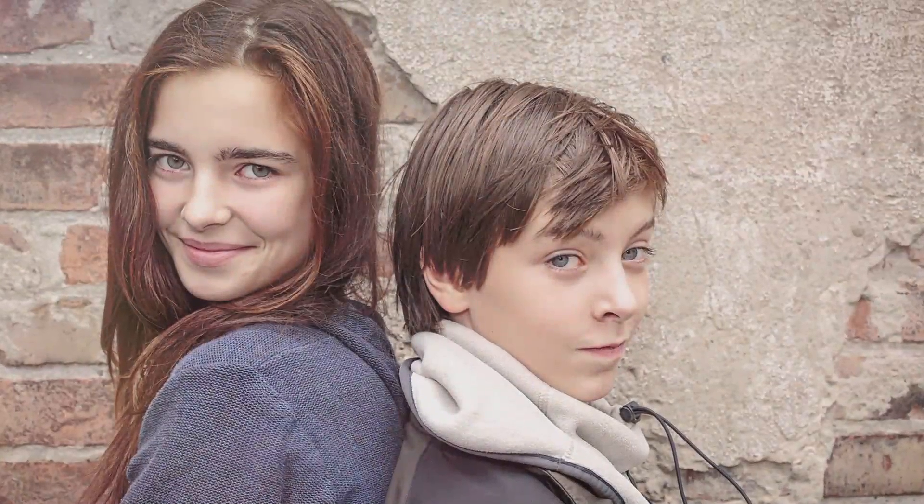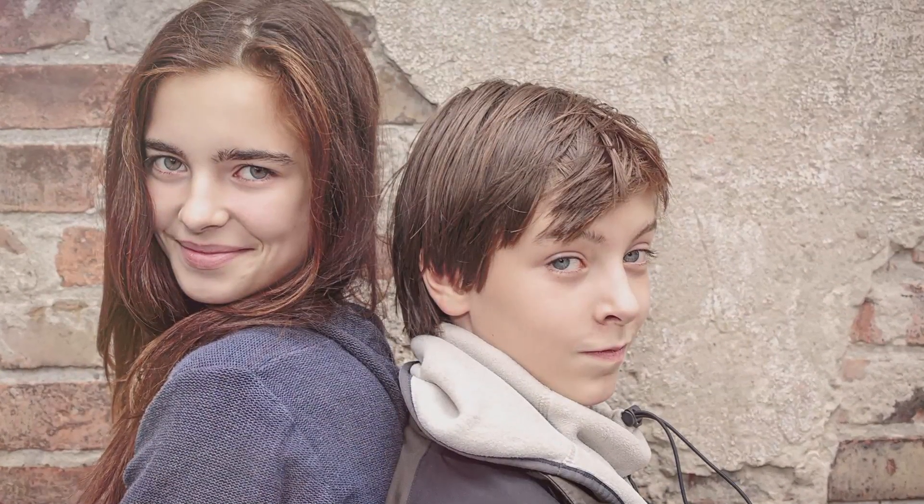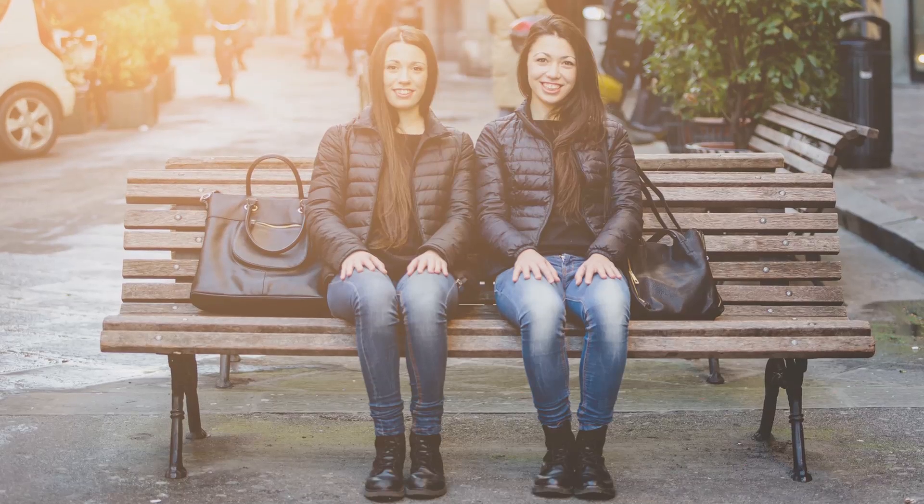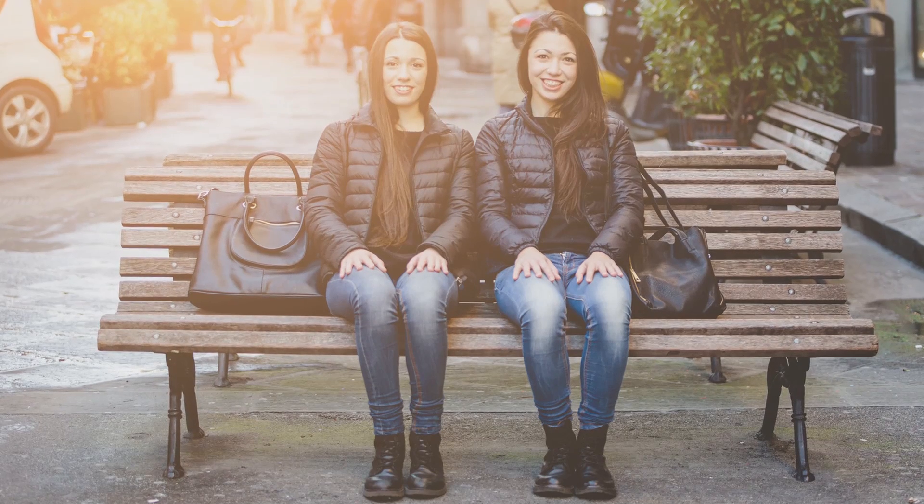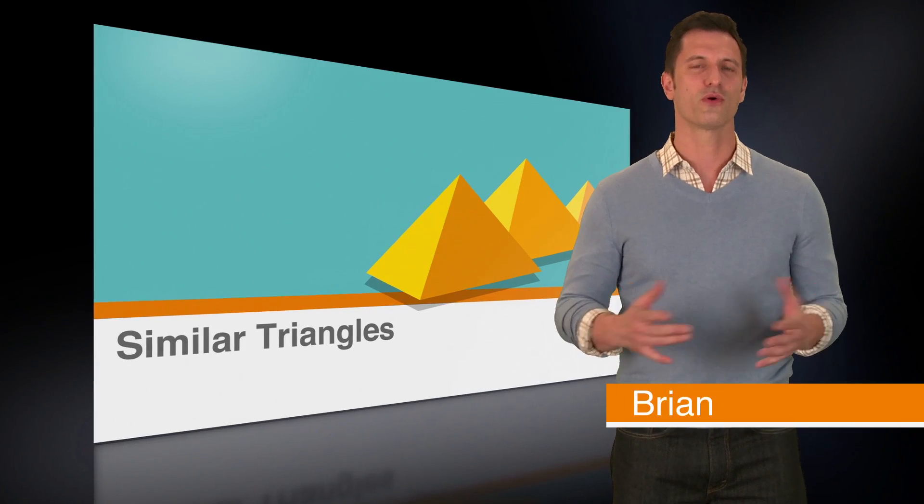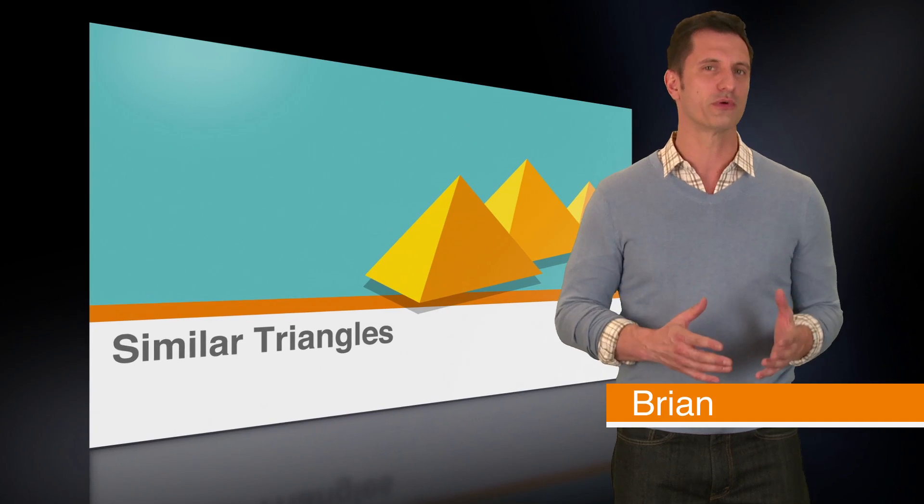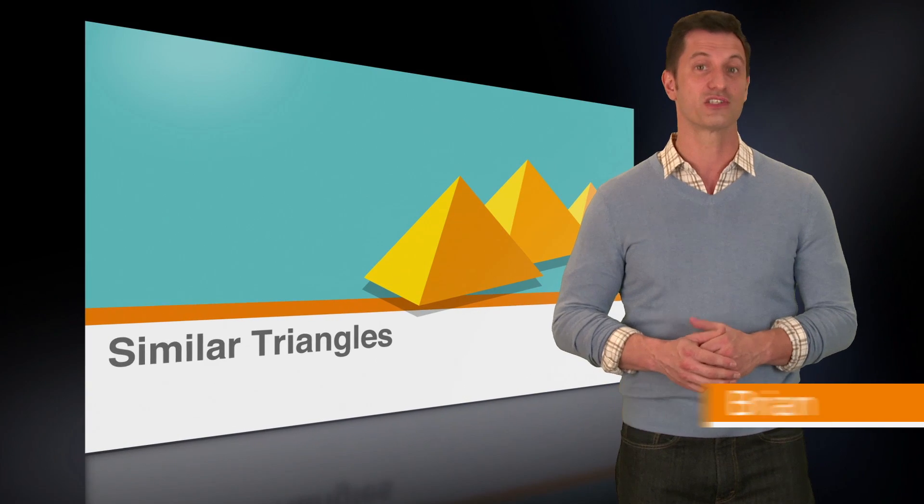Have you ever seen a pair of siblings who looked really similar but one was taller than the other? Or a pair of twins that were identical down to the size of their ears? In this lesson we're going to learn about similar and congruent triangles and apply that knowledge to some ACT problems.